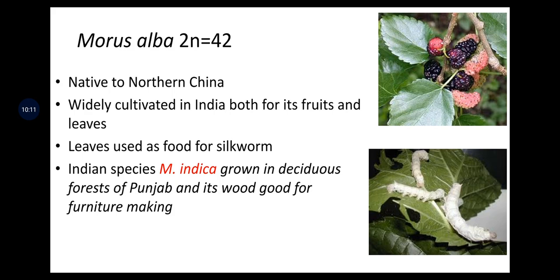Morus alba (2n = 42) is mulberry, native to northern China and widely cultivated in India both for its fruits and leaves. Leaves are used as food for silkworms. The Indian species Morus indica grows in deciduous forests of Punjab and its wood is good for furniture making.